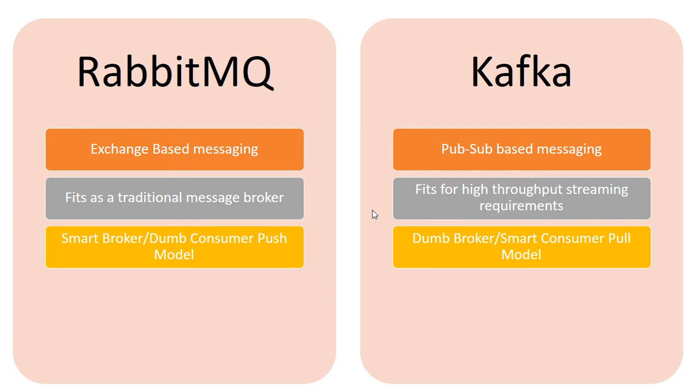The third thing to consider in comparing RabbitMQ and Kafka is the way the two products work. RabbitMQ uses a smart broker, dumb consumer messaging model — a push model. The middleware itself acts smart and consumers are dumb. Consumers don't pull messages themselves; it's the responsibility of RabbitMQ as a message broker to push messages to consumers based on their interest or subscription model.